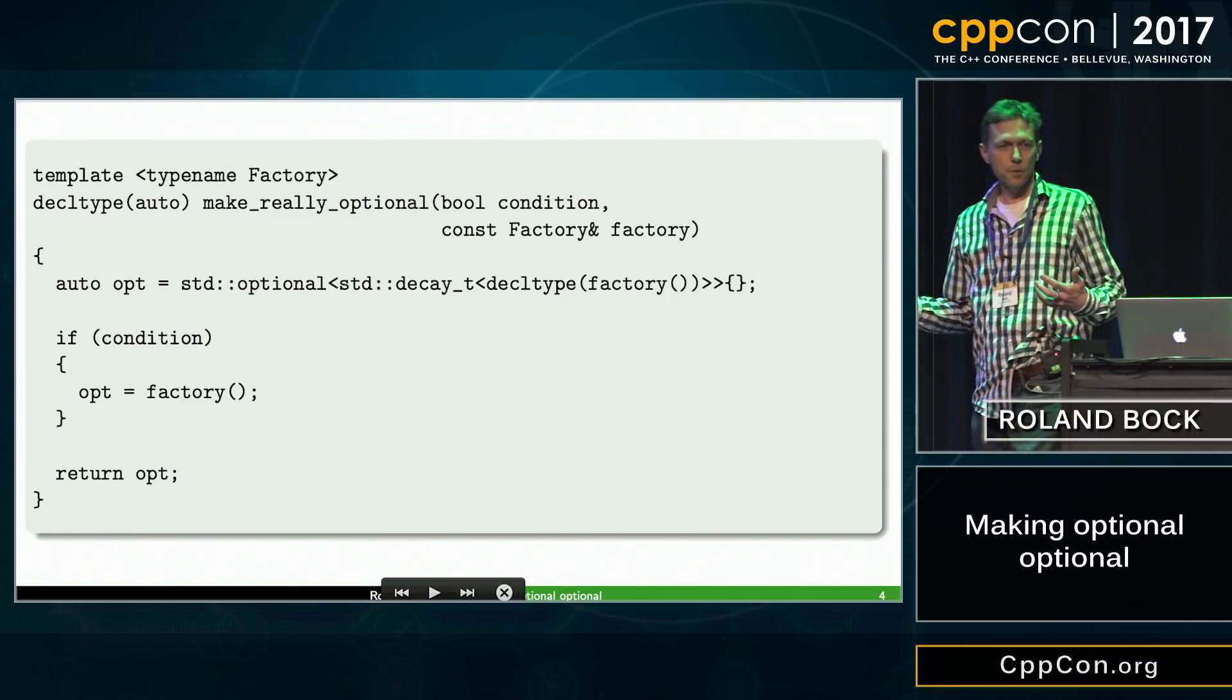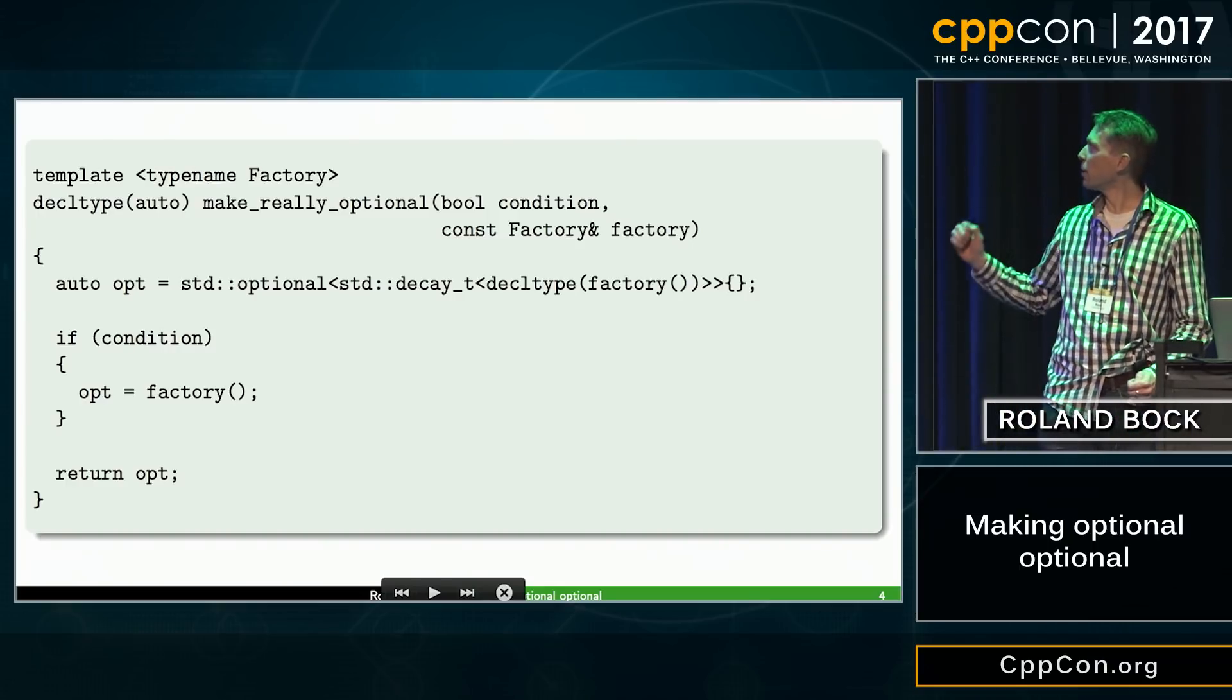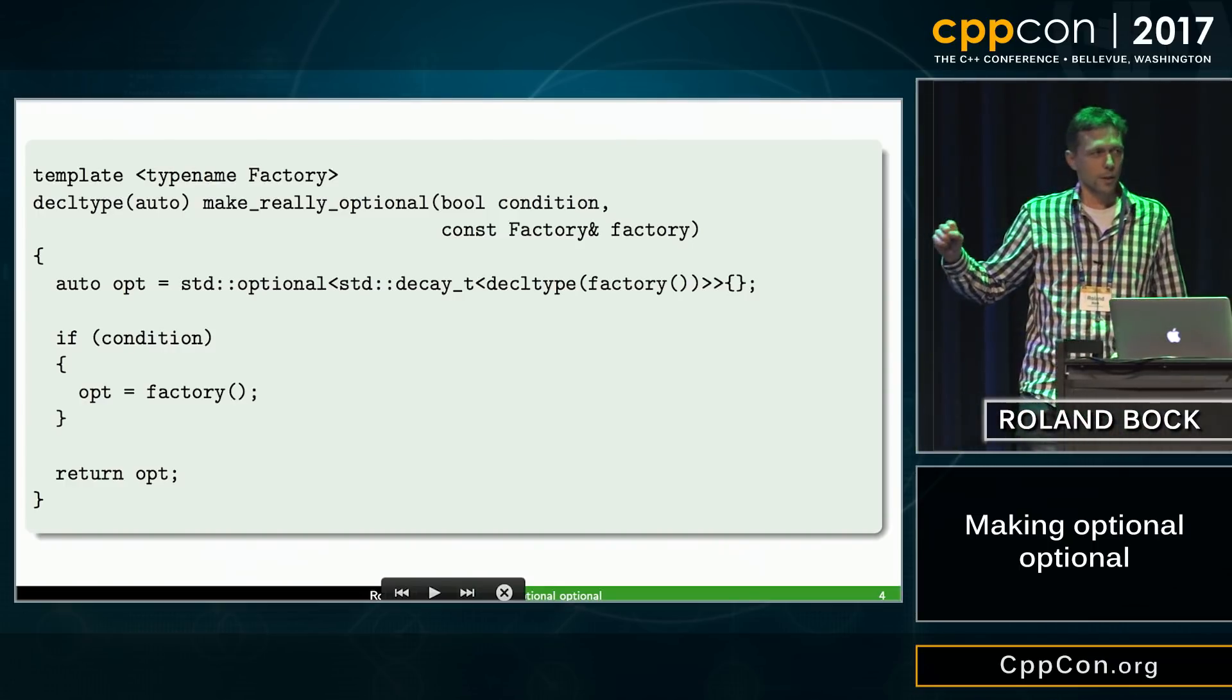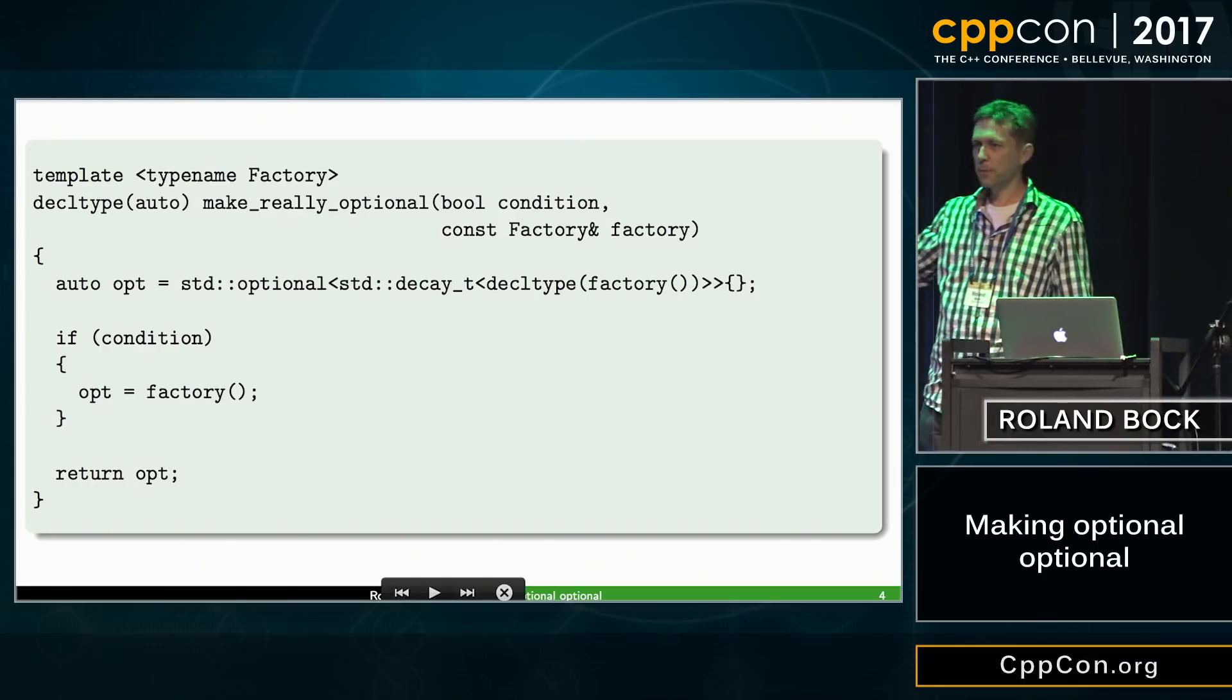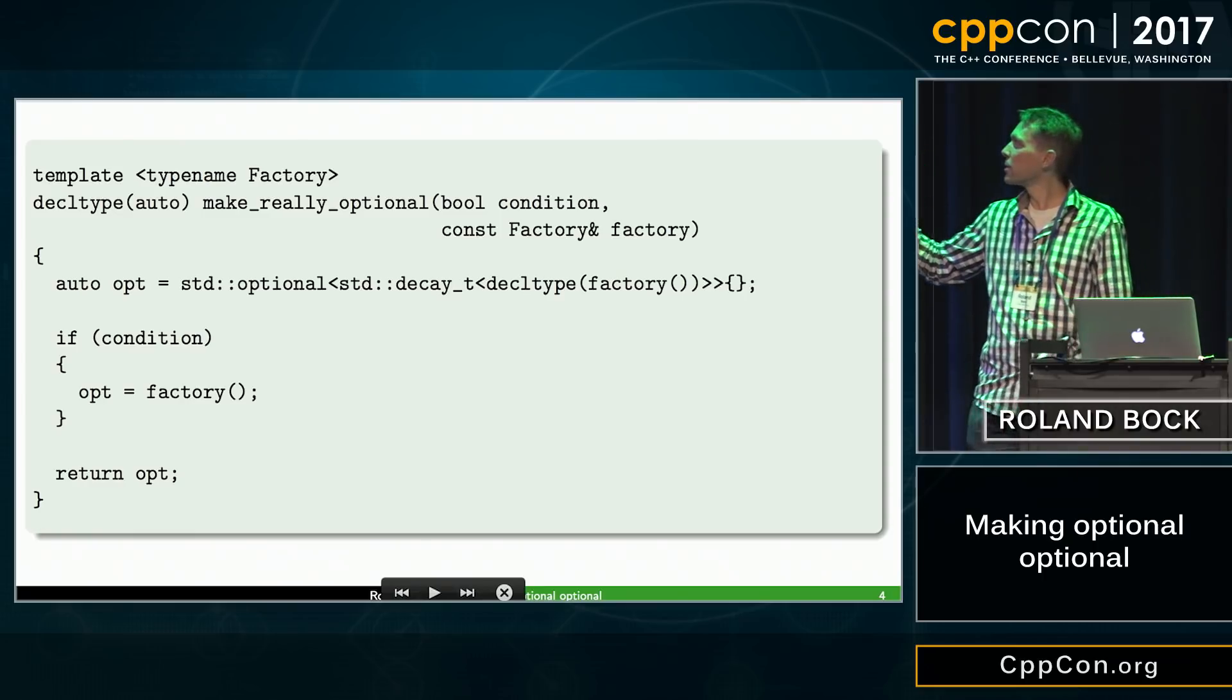So if that's not doing what I want, then maybe I write my own function. Make really optional. It gets a condition and some factory function, and then we can hide all the ugliness in this function.